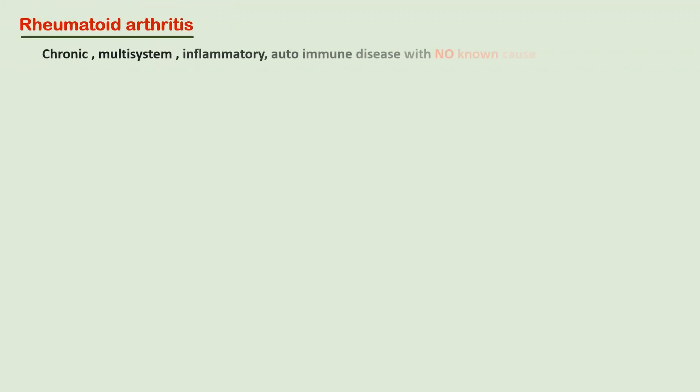Rheumatoid arthritis is basically a chronic, multi-system, inflammatory autoimmune disease with no known cause. The main manifestations of this disease are persistent inflammatory synovitis of the peripheral small joints, which leads to immobility, pain, and inflammation.